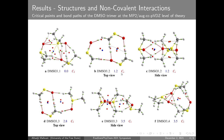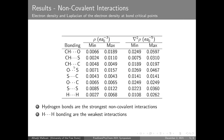From these investigations, it emerges that in DMSO clusters there are about 8 different non-covalent interactions. Hydrogen bonds are the strongest non-covalent interactions, while hydrogen-hydrogen bonds are found to be the weakest. This result is based on the electron density values at the critical points shown in the table.